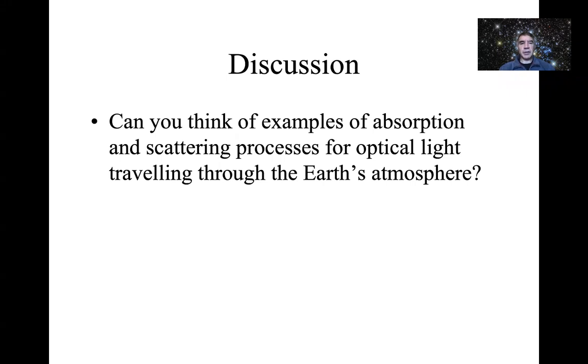I left you to think about examples of absorption and scattering of optical light in the Earth's atmosphere. There are various processes you can think about here. Examples of absorption might be that at the ultraviolet end of the spectrum, molecules like ozone in the Earth's atmosphere will absorb those ultraviolet photons as they come down through, which is just as well because that protects us from the harmful effects of the ultraviolet rays.